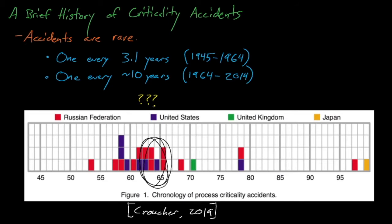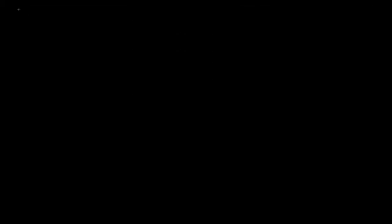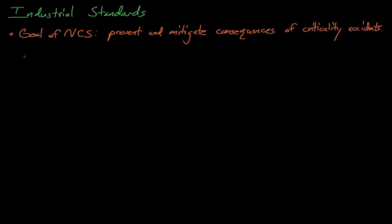Today, we're going to discuss these safety standards, which are commonly used to license and structure criticality safety programs across the country. We'll discuss what these standards are, their content, and how they are used by criticality safety programs at different sites. One of the main goals of nuclear criticality safety is to mitigate the consequences of and to ideally prevent any criticality accidents. Criticality safety involves a great deal of technical expertise and engineering intuition, but at its heart, it is an industrial safety field that aims to protect its workers and the members of the public. Like in other safety fields, it makes sense to develop a set of consensus-based standards and best practices to use as a guide for developing, maintaining, and regulating criticality safety programs.